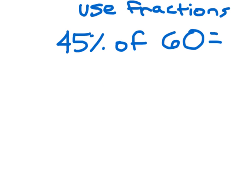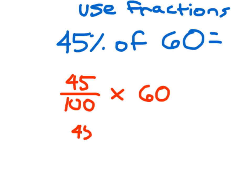One of the ways is to use fractions, so we will write 45% as a fraction to begin with: 45 over 100. We've got 45 over 100, and we say of 60. So of 60, we'll go ahead and multiply by 60.